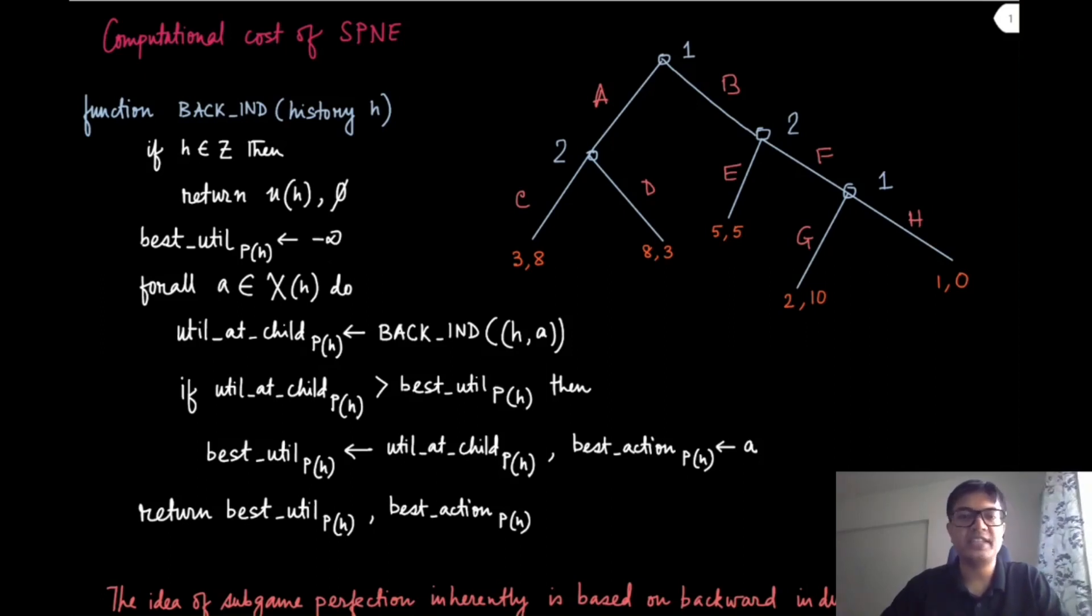Here is the same game from the previous module and also the algorithm—the backward induction algorithm—that finds a subgame perfect Nash equilibrium for any PIEFG.